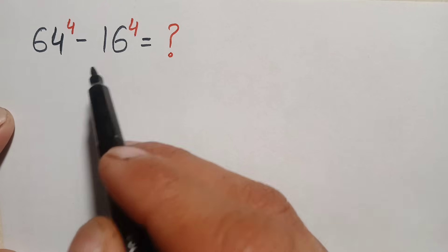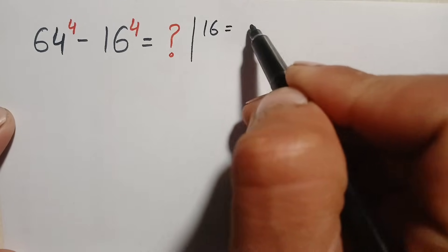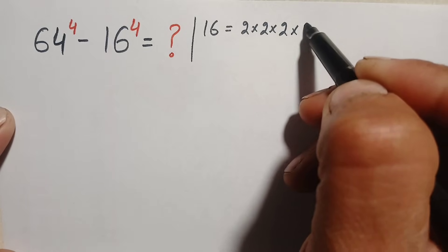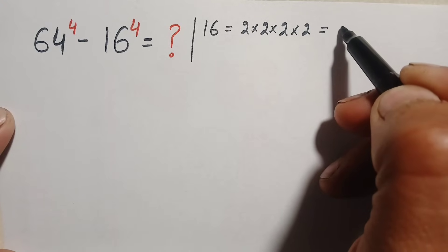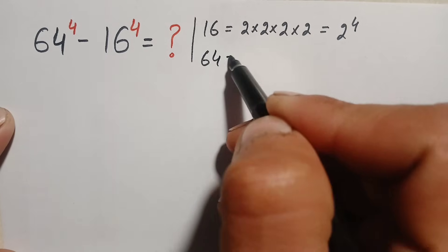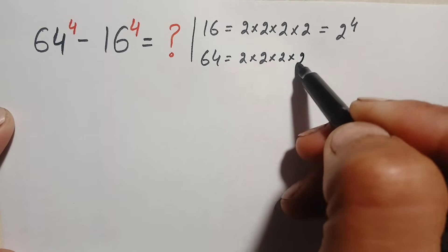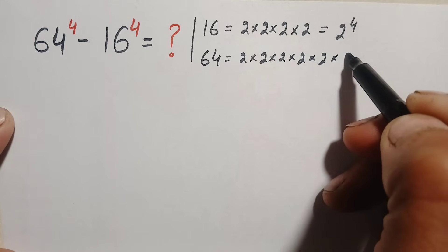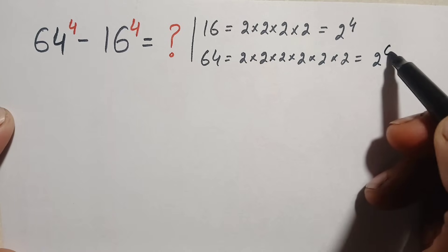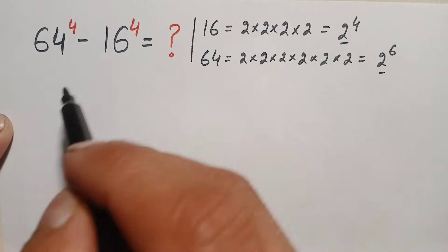First of all, we can write 16 as 2 times 2 is 4, 4 times 2 is 8, and 8 times 2 is 16, so 2 appears 4 times. We can write this as 2 raised to power 4. Similarly, 64 can be written as 2 times 2 is 4, 4 times 2 is 8, 8 times 2 is 16, 16 times 2 is 32, 32 times 2 is 64, so 2 appears 6 times — written as 2 raised to power 6. We now replace both numbers with these exponential values.